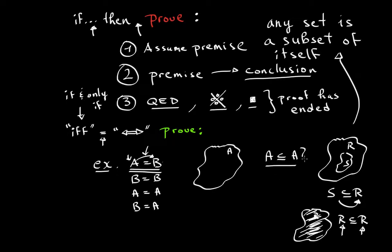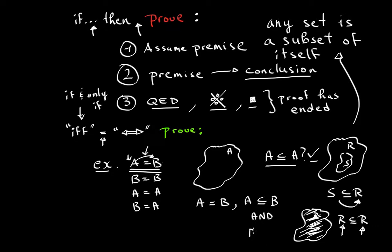So, is A a subset of A? Yes, it is. When they give you A equals B, that is the same as saying: A is a subset of B, and B is a subset of A. This is very important in order to do if-and-only-if proofs.